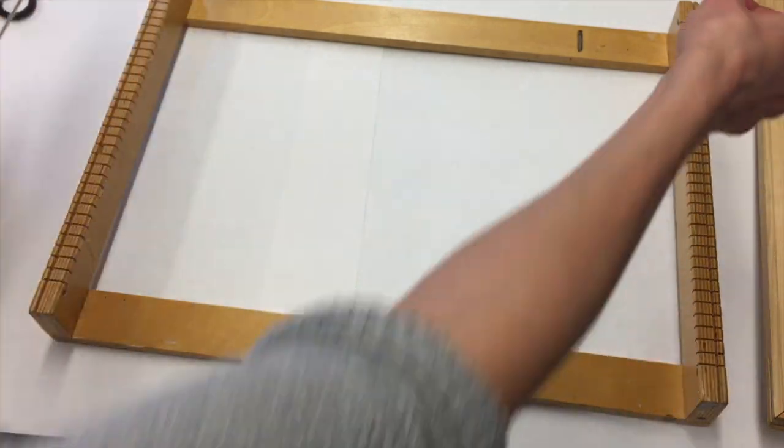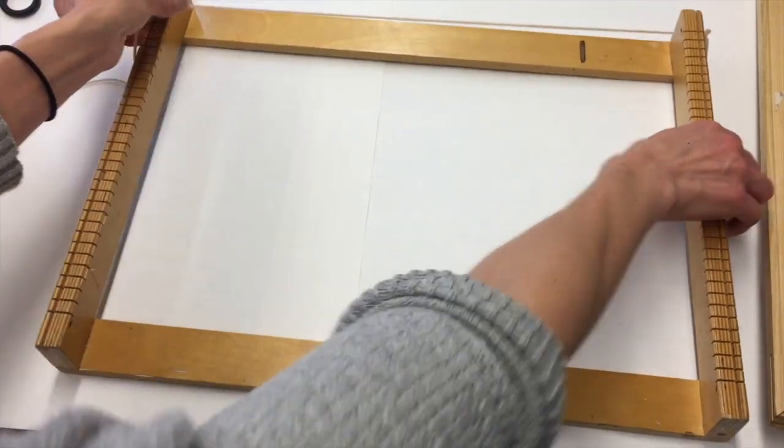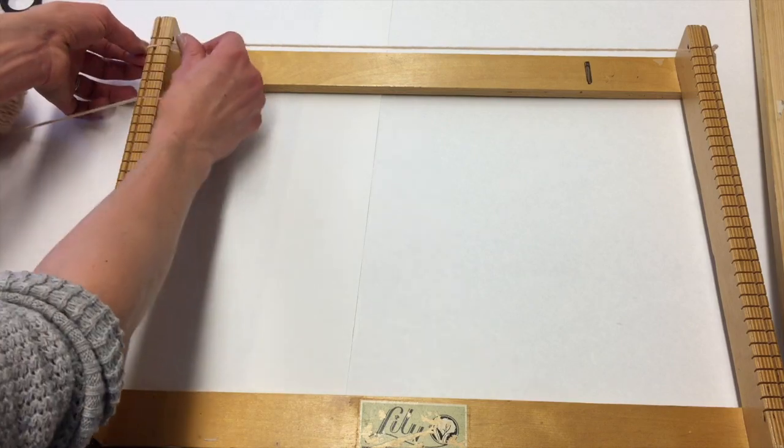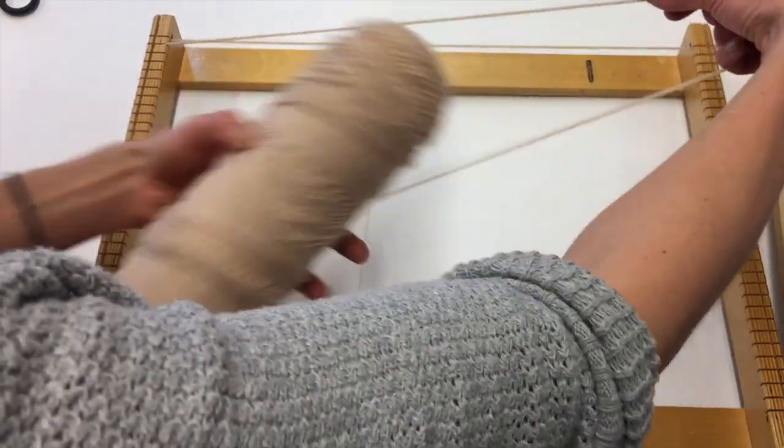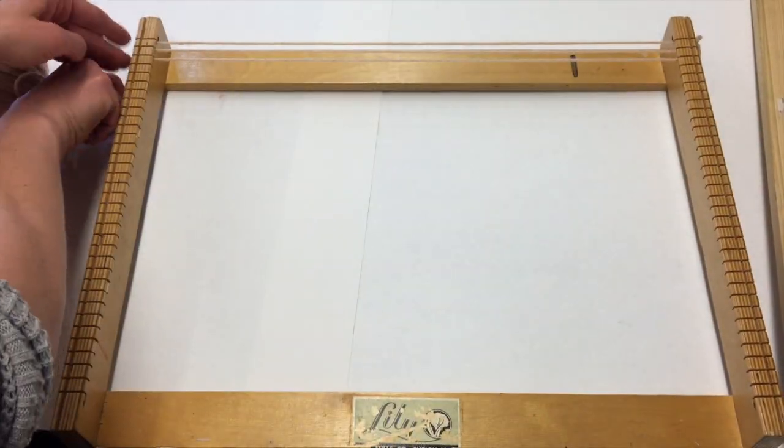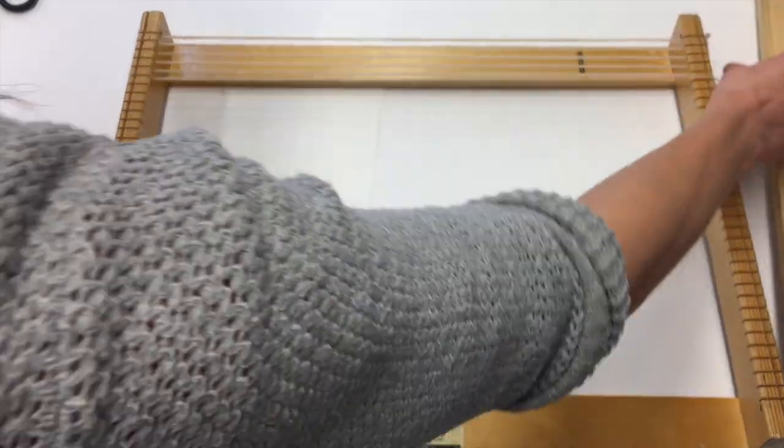Once I have my knot, I can go ahead and put it in that first notch on my loom just like that. Then I will go across the loom and over one notch and continue to go across and over until my entire loom is filled, making sure that I keep my warp string nice and tense.